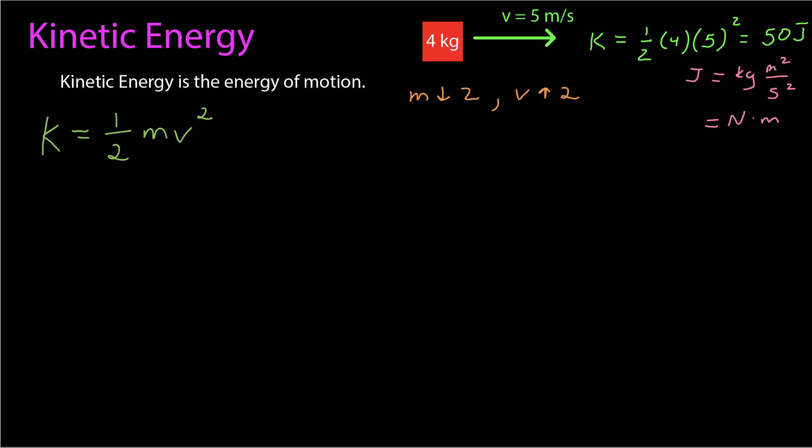It's really handy to use proportional reasoning with kinetic energy because it's so simple. If the mass goes down by a factor of 2, energy goes down by a factor of 2. It goes 50 to 25. If the speed goes up by a factor of 2, then the kinetic energy goes up by a factor of 4. It would be 50 joules to 200 joules.